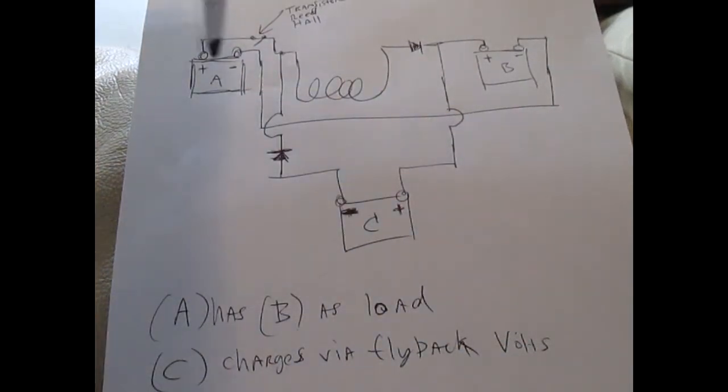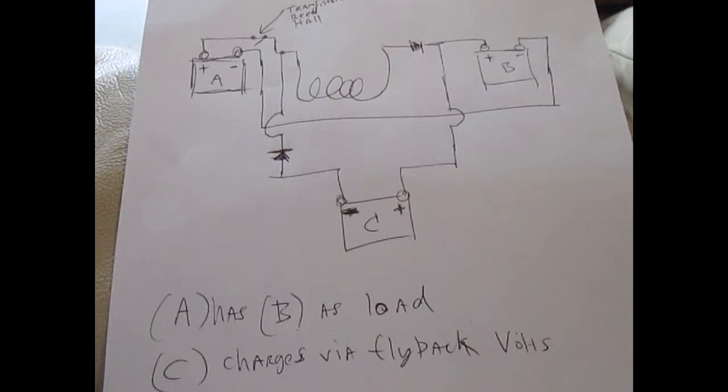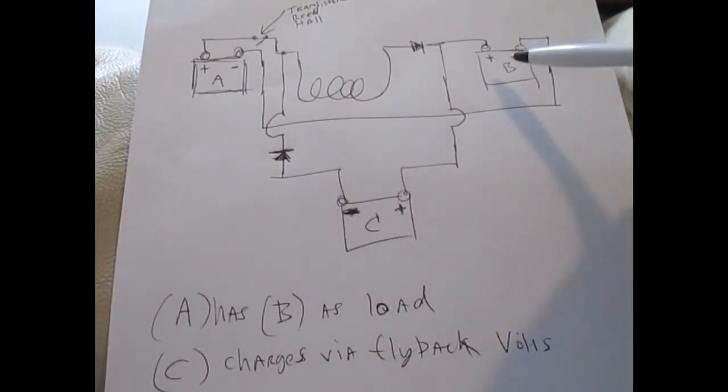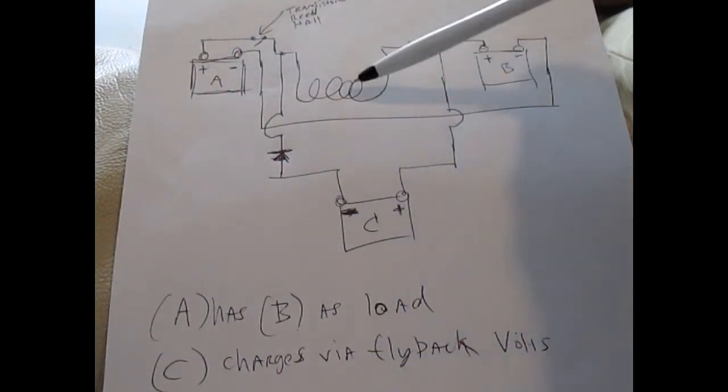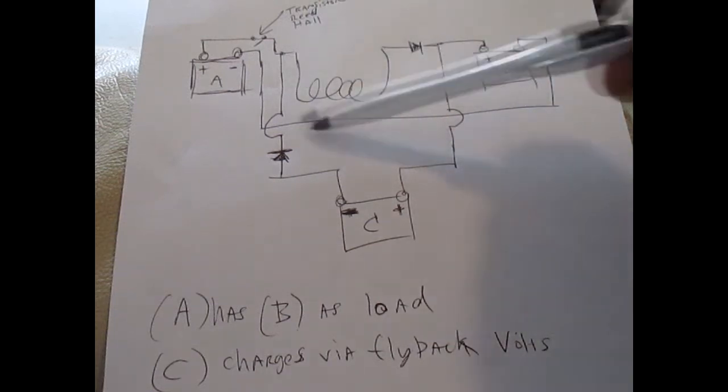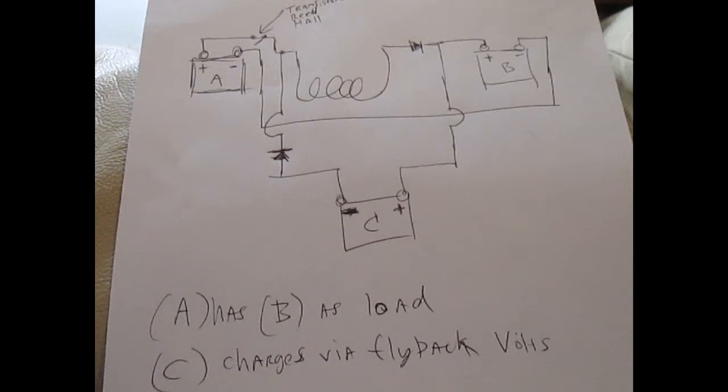So Battery A is your source power. Battery B is your load. So is this coil. Together they are in series to negative. You switch it here with a transistor, reed or a hall switch, whatever.